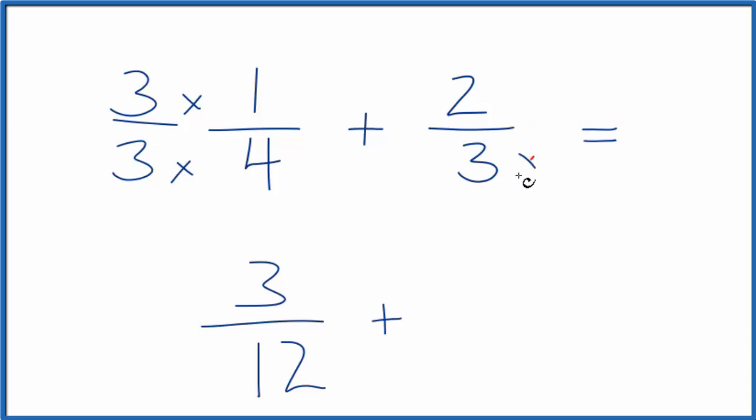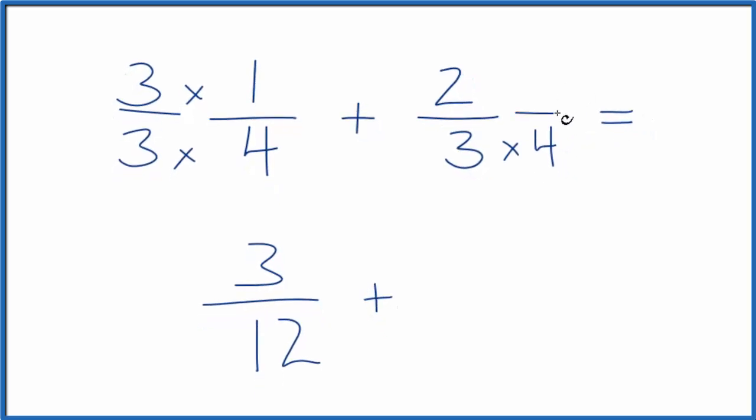On this side, three times four, that would give us 12. But again, we need to multiply the top numerator by four as well. Two times four is eight, and then three times four, that's 12. So now we have this common denominator here.